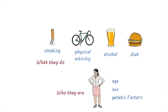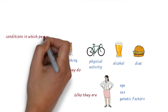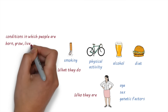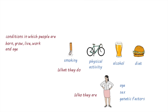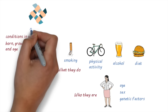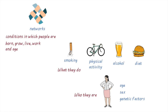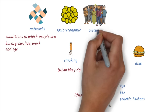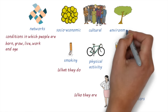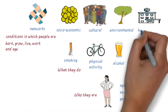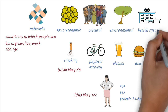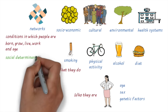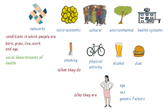Health is also largely influenced by the conditions in which people are born, grow, live, work, and age. These include their social and community networks, the socio-economic, cultural, and environmental conditions that people live in, and also health systems. These are collectively called the social determinants of health.